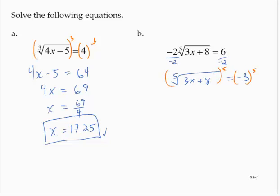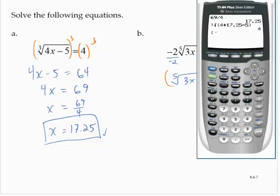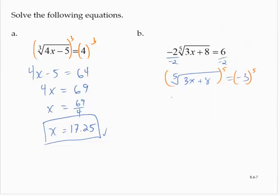Raise negative 3 to the fifth power to get negative 243. So 3x plus 8 is equal to negative 243.